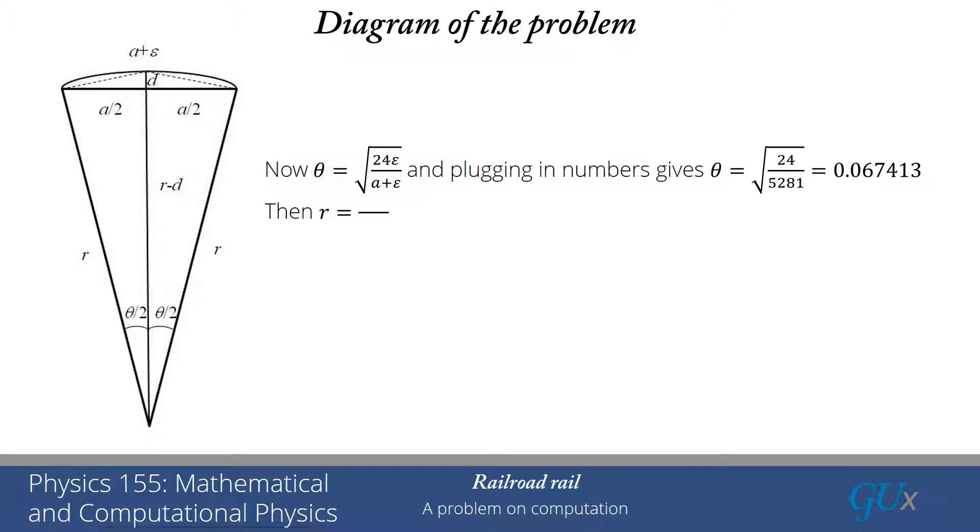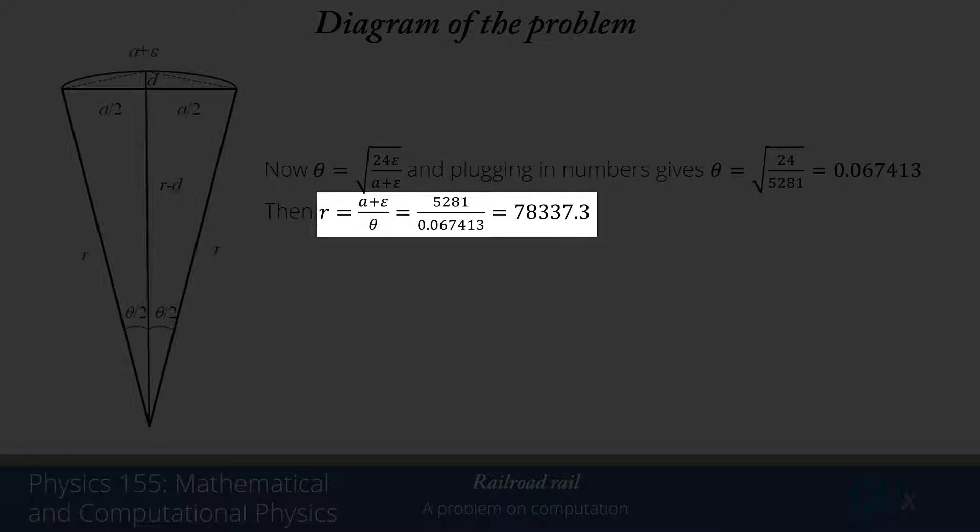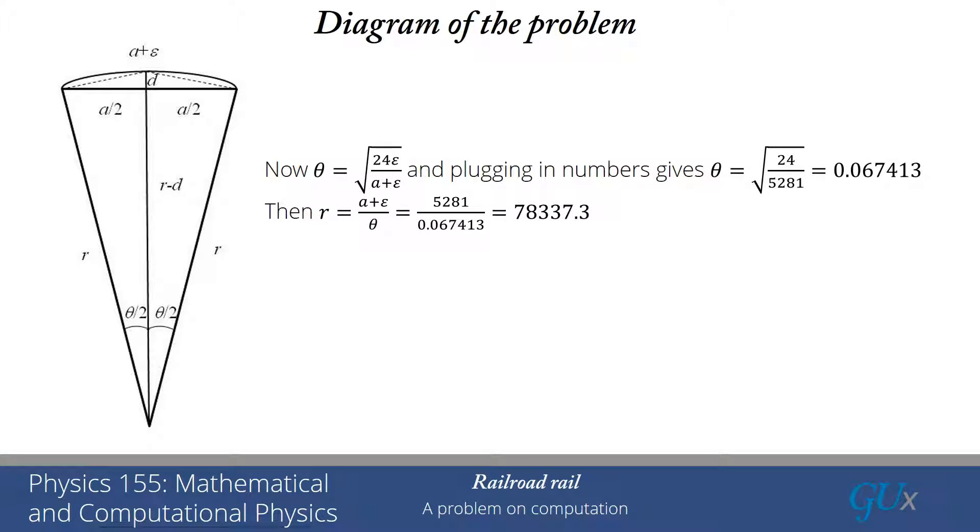Now I'm ready to determine R. R was A plus epsilon over theta. Plugging in those numbers, I get 78,337 feet. It is about 40 times bigger than A over 2, or the radius is 40 times bigger than that full arc length. You can see that this picture is really not drawn to scale. This angle theta is a very small angle, much smaller than the way it's drawn here.